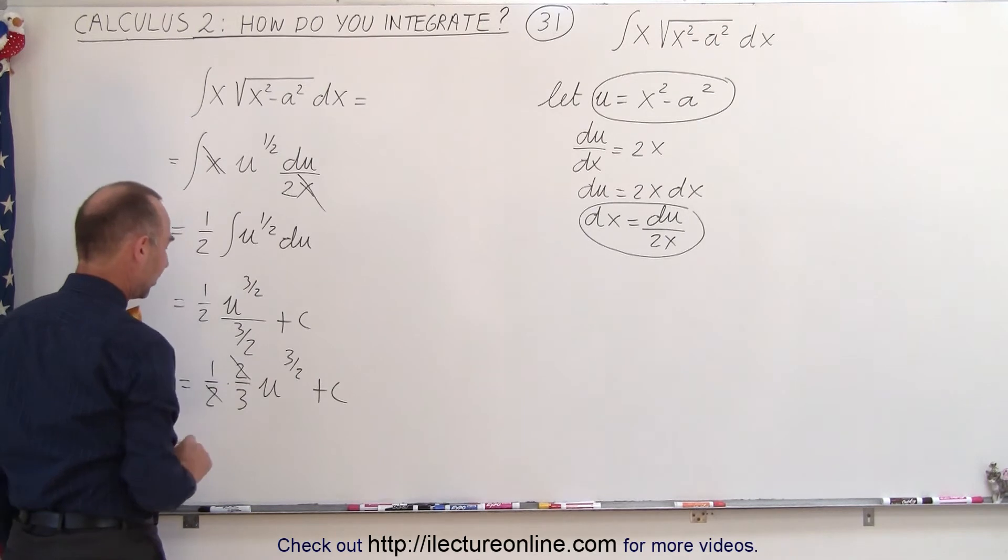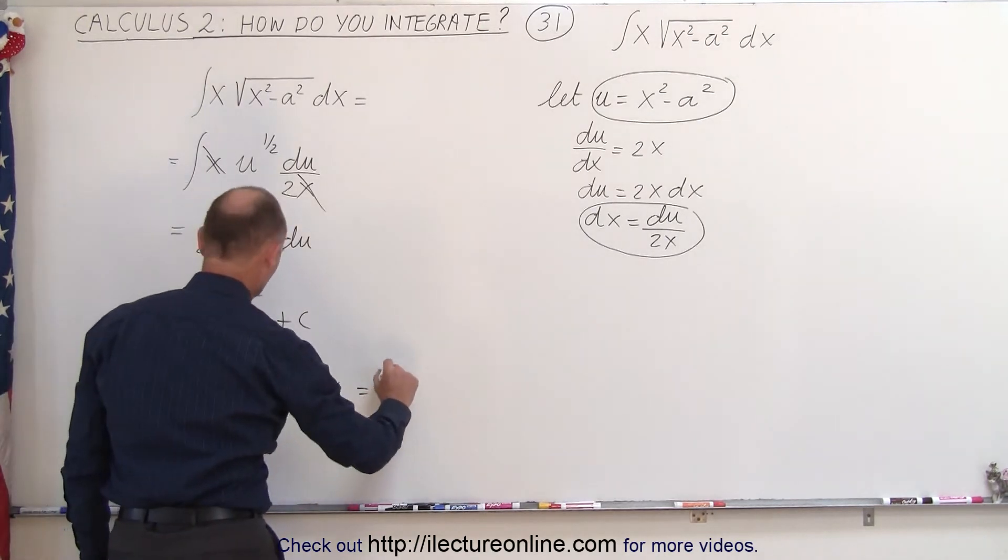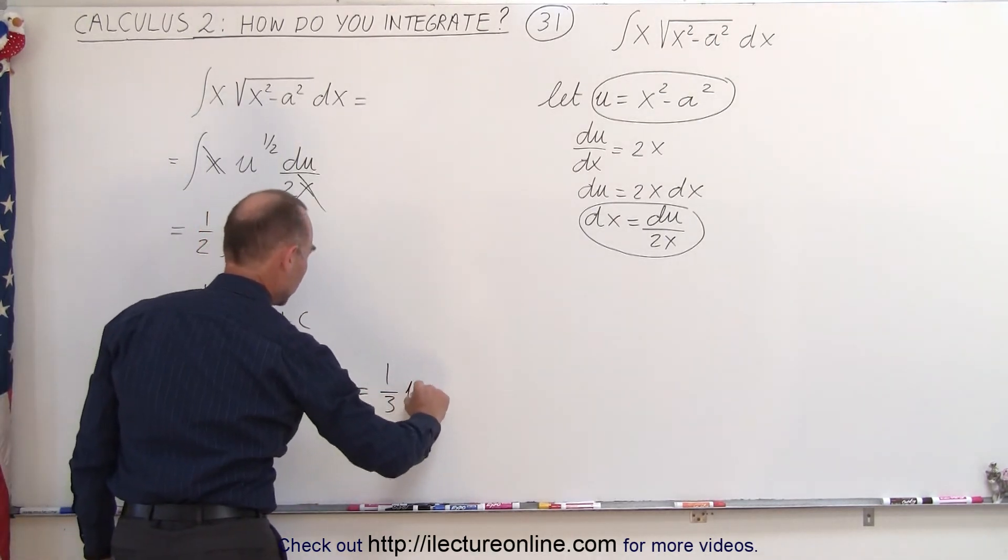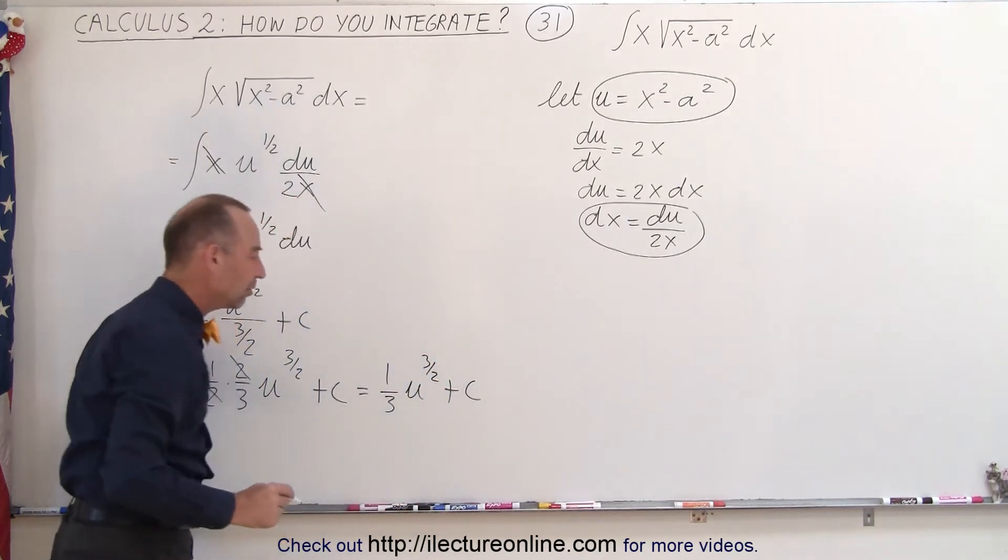Notice that the twos cancel out, so this becomes equal to 1 third u to the 3 halves plus a constant of integration.